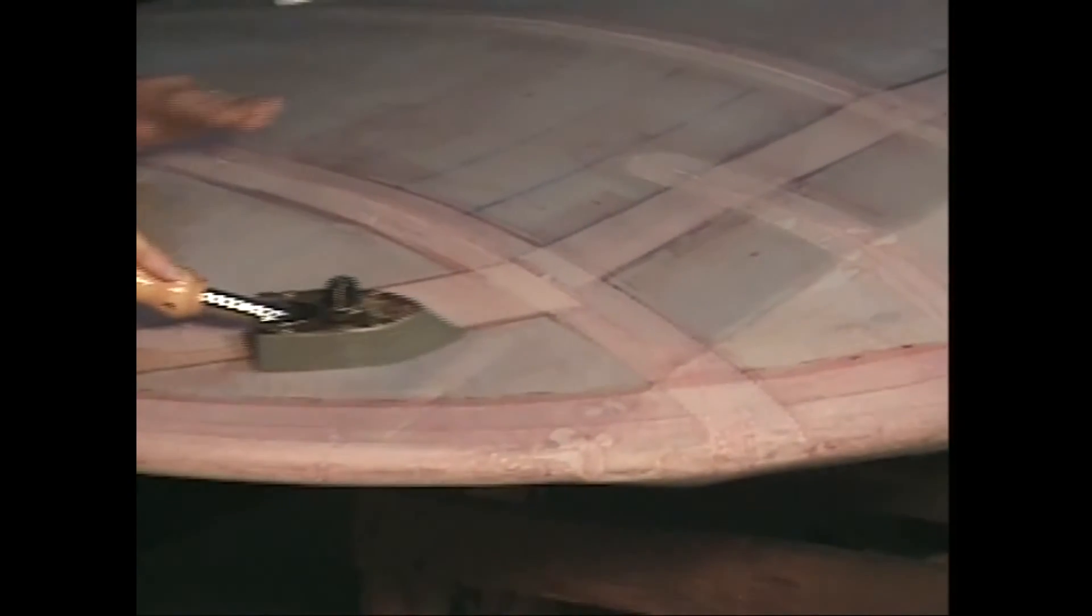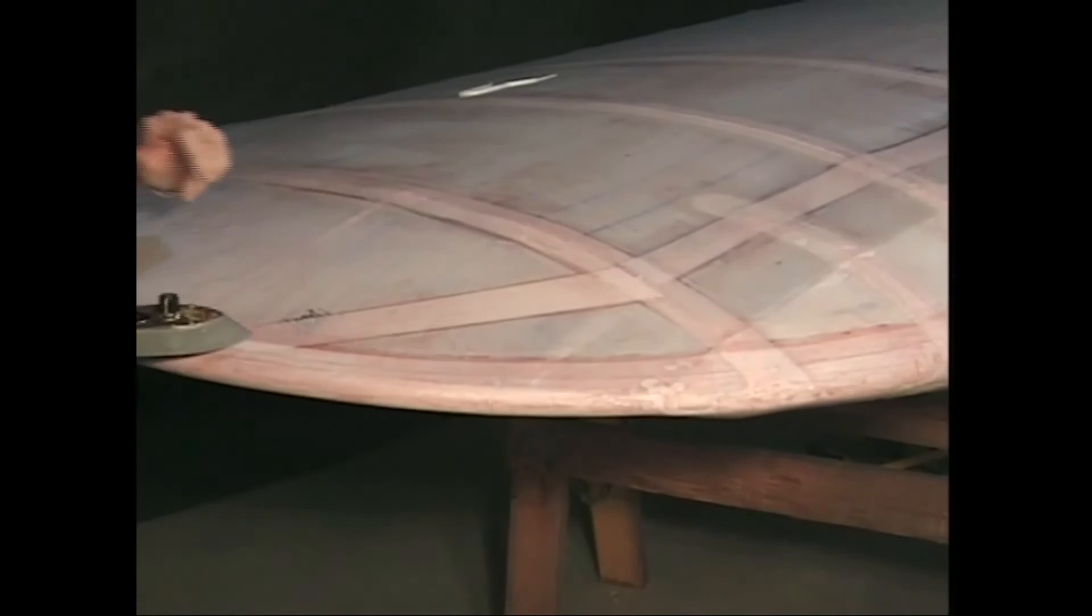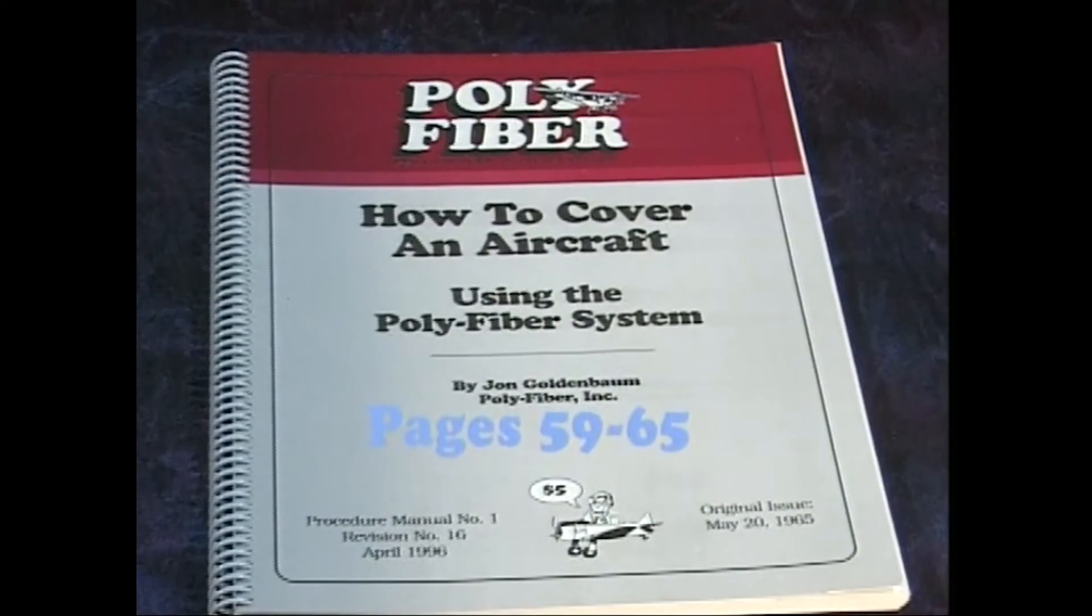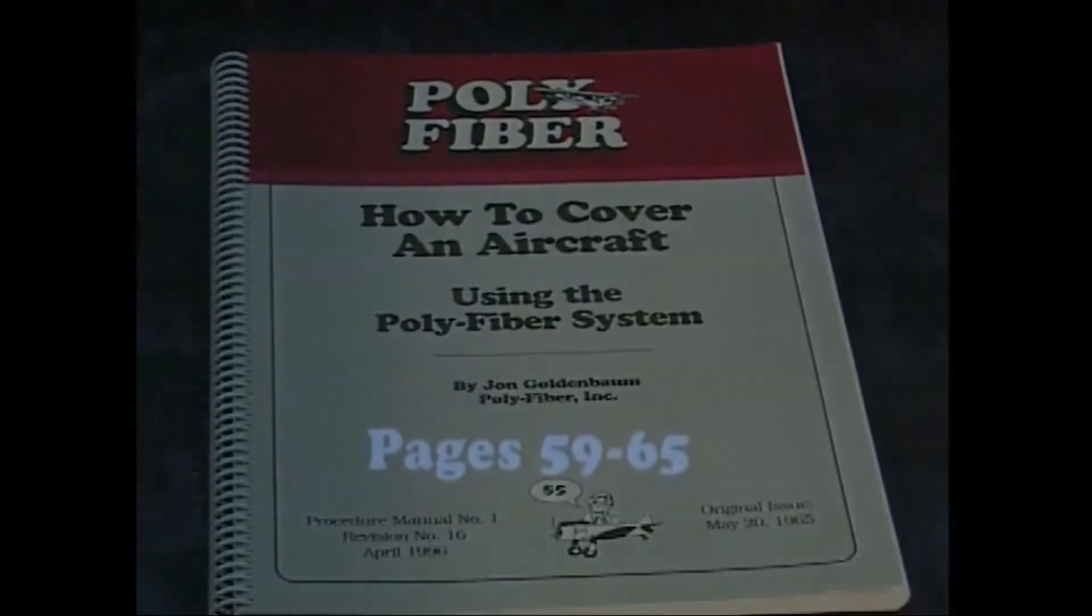UV protection. Let's take a look at covering control surfaces and the fuselage. There is an excellent section in your manual on pages 59 through 65 that also discusses this.